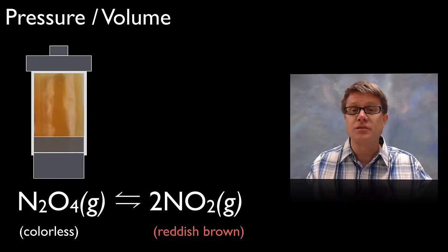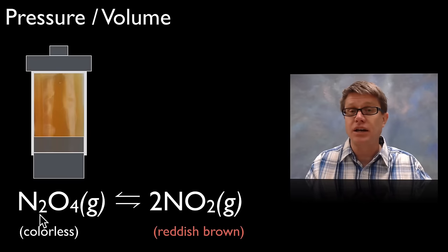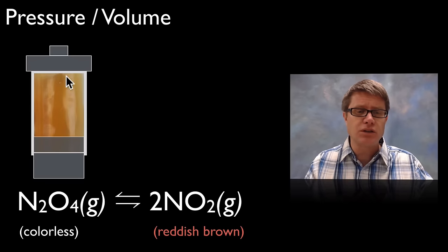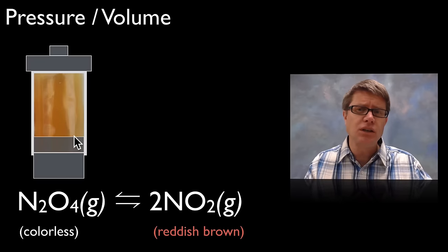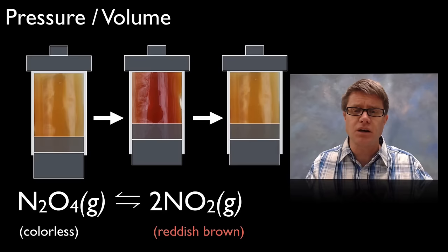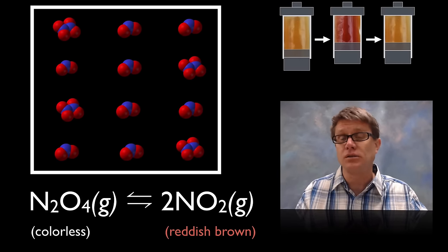This also applies to pressure caused by changes in volume. Looking at this reversible reaction where dinitrogen tetraoxide — a clear gas — moves reversibly to nitrogen dioxide, a reddish-brown gas. If we put a mixture of these gases at equilibrium inside a chamber and decrease the volume, it's going to be more concentrated and we're going to have a darker color. But if you watch it for a given amount of time it will turn back to the original color. To understand what's really going on we need to look at the molecular level.